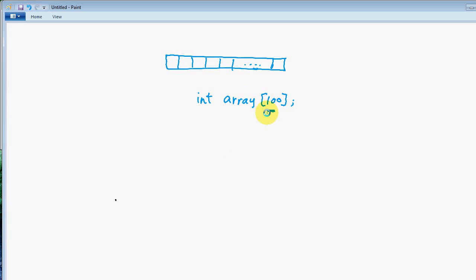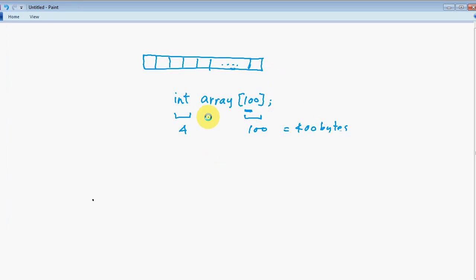So now if you declare it this way, in general, the size of this array is the number of elements here times the number of bytes required to store each element, which in this case is integer. So most of the time in a 32-bit machine, it's going to be 4 bytes. And 100 elements, which will take up 400 bytes. Now this is a very simple example.